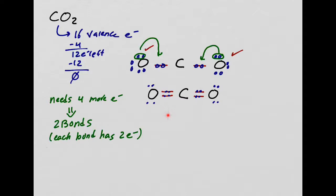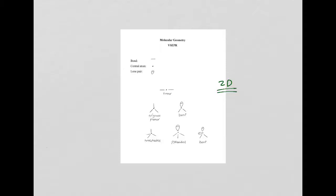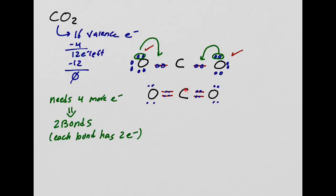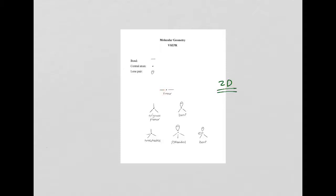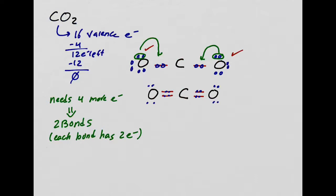For geometry: double bonds and triple bonds have no effect on the shape — they affect bond length but not overall geometry. Looking at CO2: center atom has two bonds and no lone pairs. The geometry is linear. So CO2 is linear.